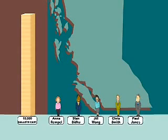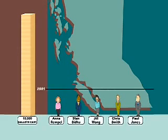In this example, the riding will elect three MLAs and there are five candidates running. Since 10,000 voters cast ballots, a candidate needs 2,501 votes to be declared elected.